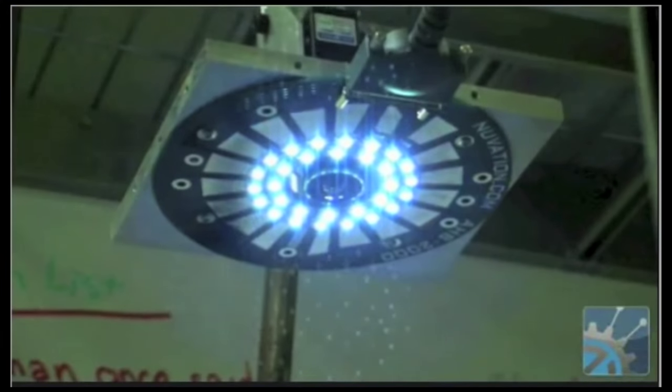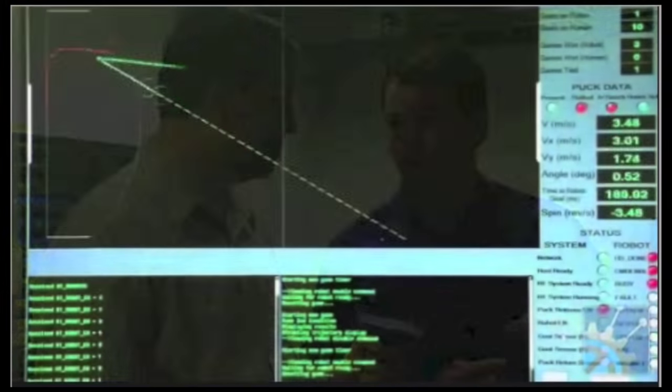Sure. So above the table, there's a video camera with lights that are blinking at very high frequency. And every nine milliseconds, it captures the status of the game. And so it can see the puck. And there's actually a reflective strip on the top of the puck that's a rectangle. So it can tell the puck XY location and also the puck's spin.